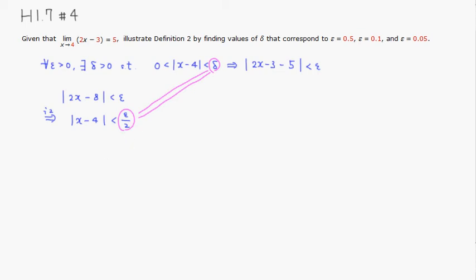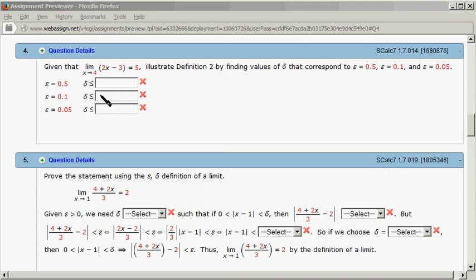So if it's 0.5, it's going to be half of that is 0.25, and if it's 0.1, that'll be 0.05, and 0.05 then that will be 0.025.